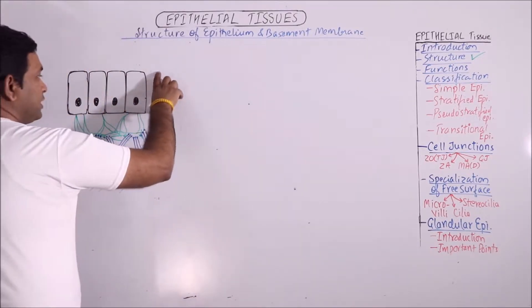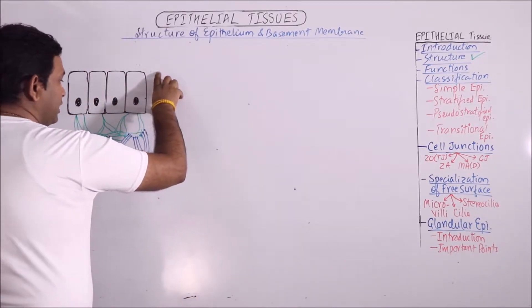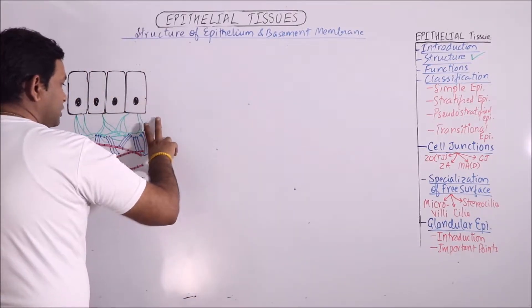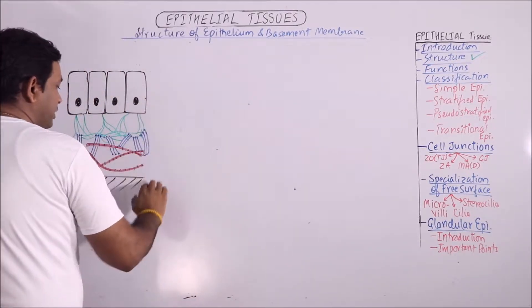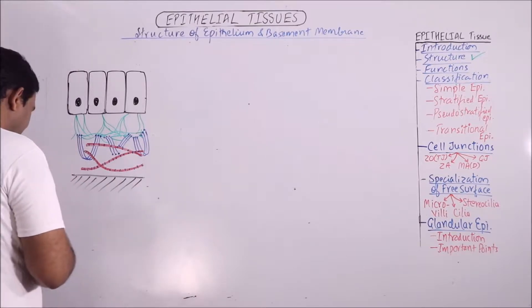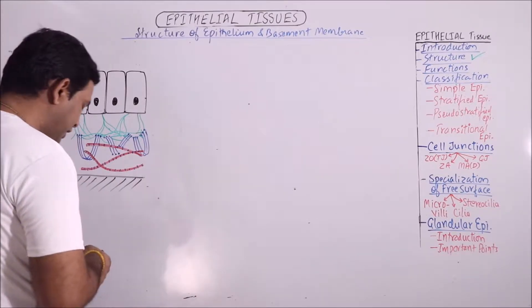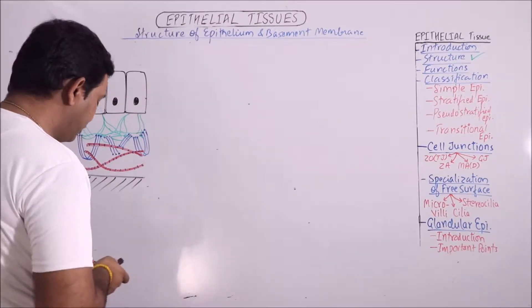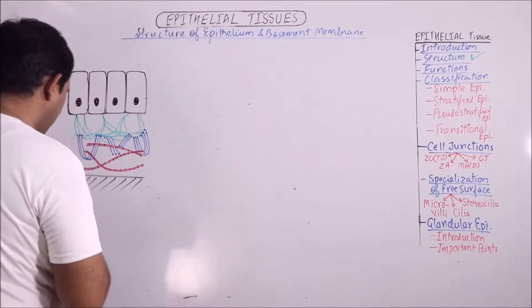This is representing epithelia, this is the basement membrane, and this is the underlying connective tissue located below the basement membrane.